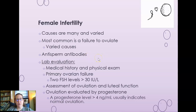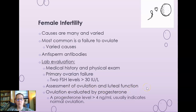Lab evaluation of female infertility starts with a medical history and physical exam. Primary ovarian failure shows two FSH levels greater than 30. In Johnna's case, she had greater than 40 on two tests a month apart, indicating primary ovarian failure. We can assess ovulation and luteal function by collecting samples over an entire cycle — checking estrogen, progesterone, LH, and FSH curves throughout. Ovulation is specifically evaluated by progesterone levels greater than 4 nanograms to indicate normal ovulation.